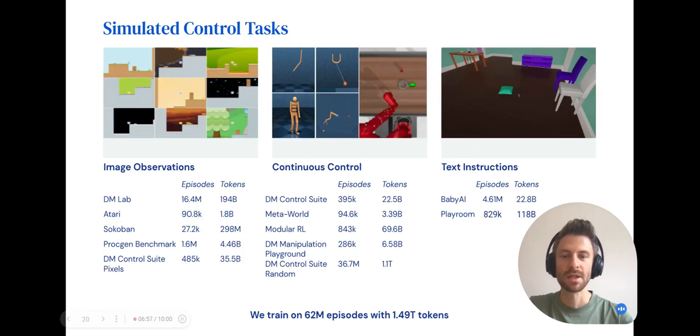Zooming into the simulated control tasks, we can see we have environments with visual observations, proprioceptive features, and text instructions. In total, our datasets contain 62 million episodes, with almost 1.5 trillion tokens.